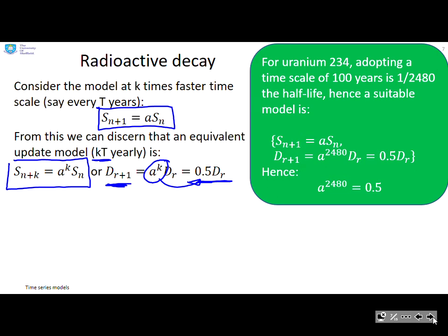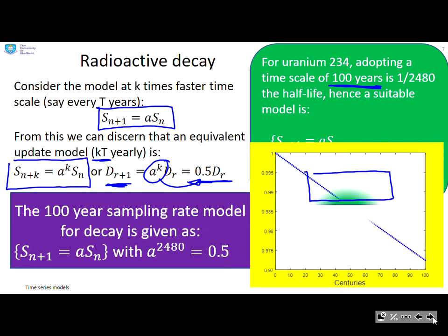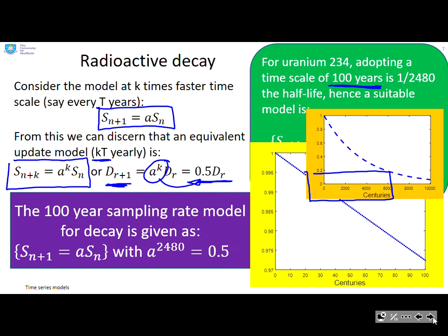You can see that for uranium-234, adopting a timescale of 100 years is going to be 1 over 2480, the half-life. And therefore, you can end up with a formula that a^2480 equals 0.5. So I can find a value for a where the update period is now 100 years rather than 248,000 years. If we solve that, you can find a corresponding value of a. And now you can see we can update things more easily using centuries rather than using the half-life, which was a very awkward number.